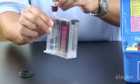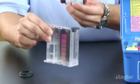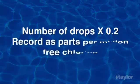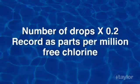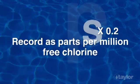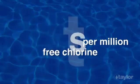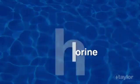Multiply the drops needed to make the color change by 0.2. Record the result as parts per million free chlorine.